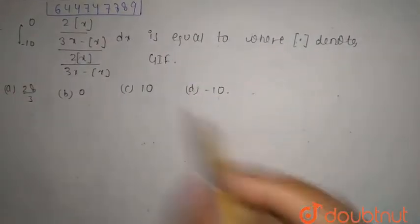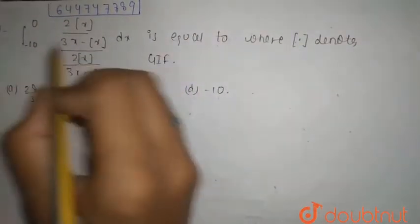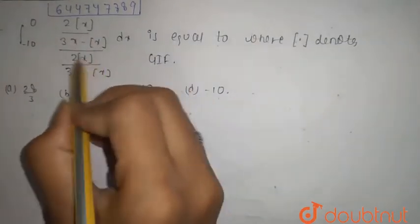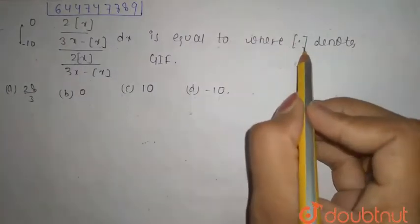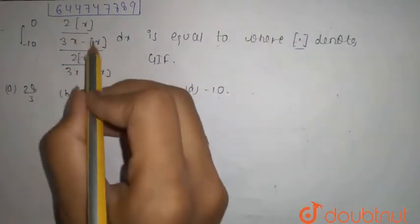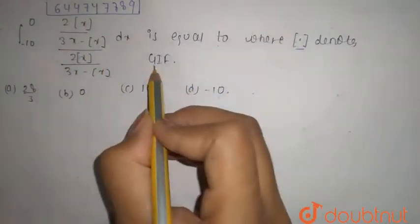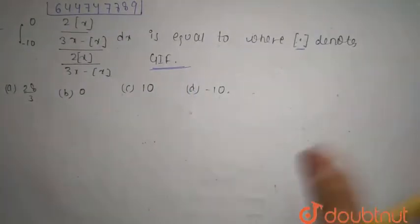Hello students, so today's question is: minus 10 to 0 integration, 2x divided by 3x minus x, divided by 2x divided by 3x minus x. 3x is equal to where these brackets here denote GIF, that is greatest integer function.